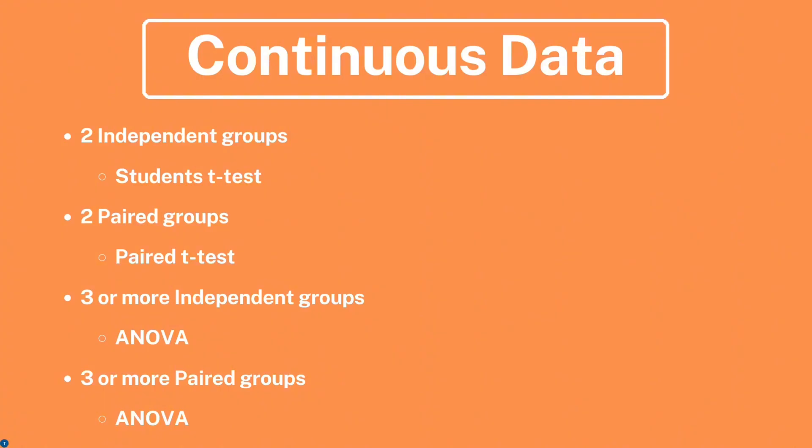If you have two independent groups, you would use a Student's t-test; two paired groups, a paired t-test; three or more independent groups, ANOVA; and three or more paired groups, you would use an ANOVA.